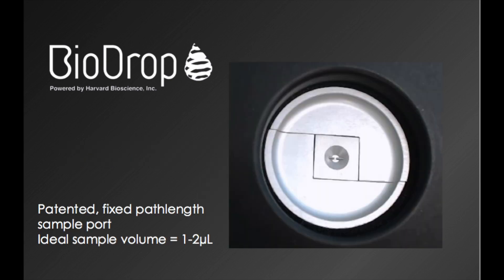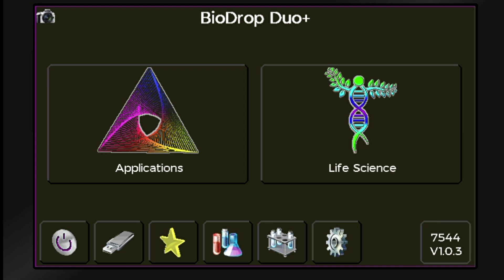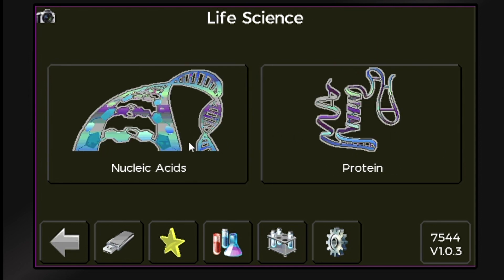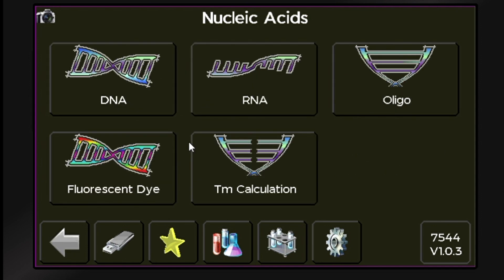The patented microvolume sample port has a fixed path length and is ideal for samples between 1 and 2 microliters. All Biodrop instruments come fully loaded with common life science applications including both nucleic acids and proteins, and both of these also include fluorescent dye applications.